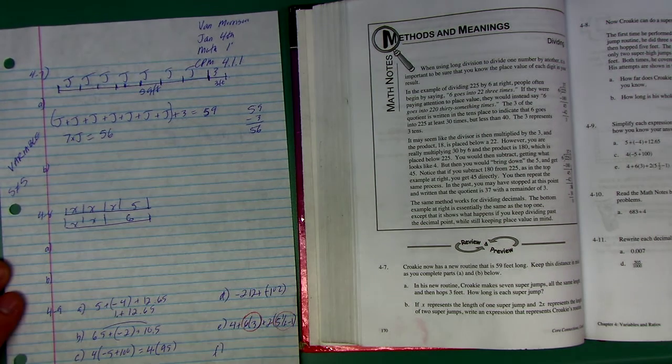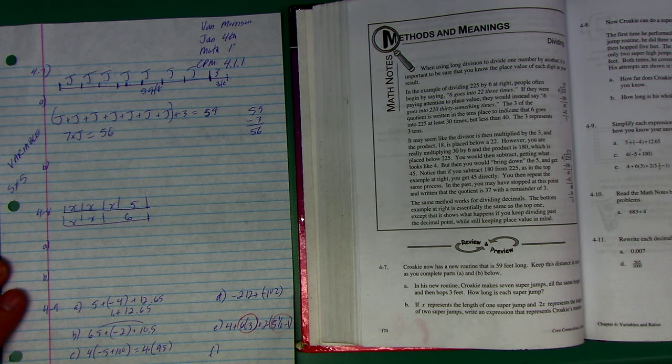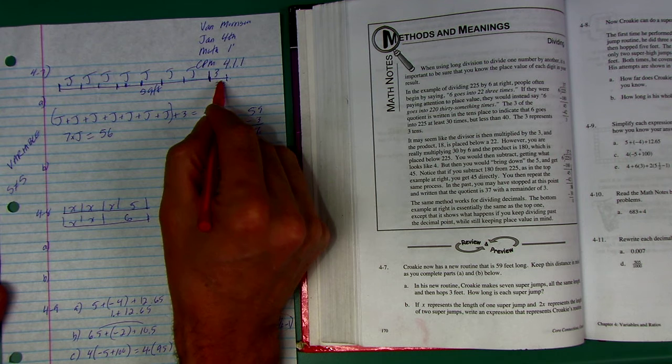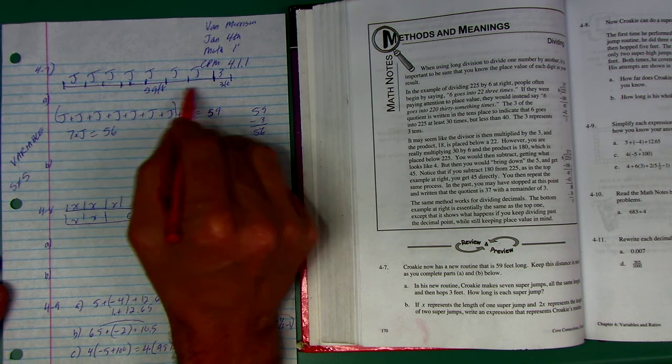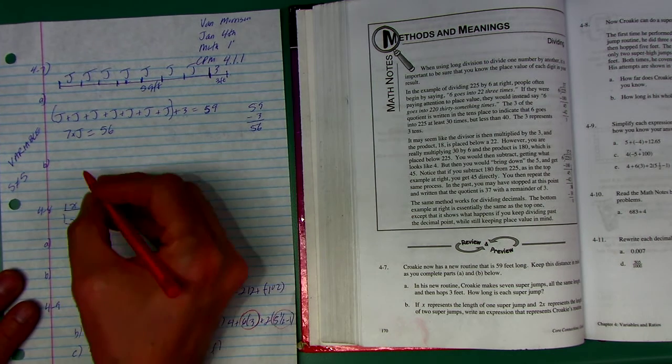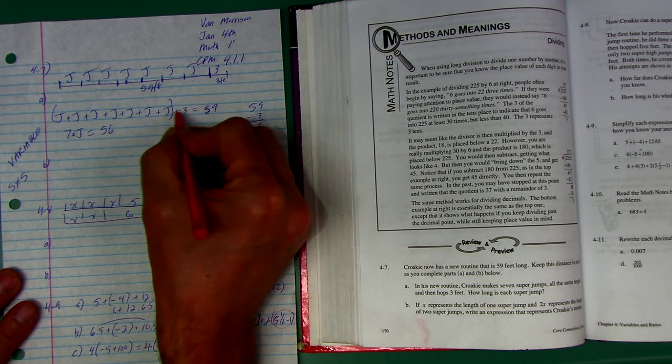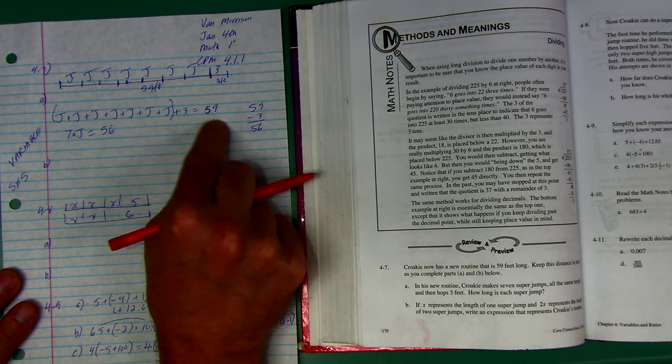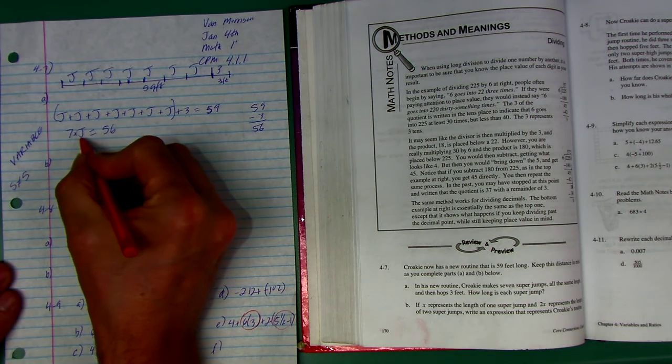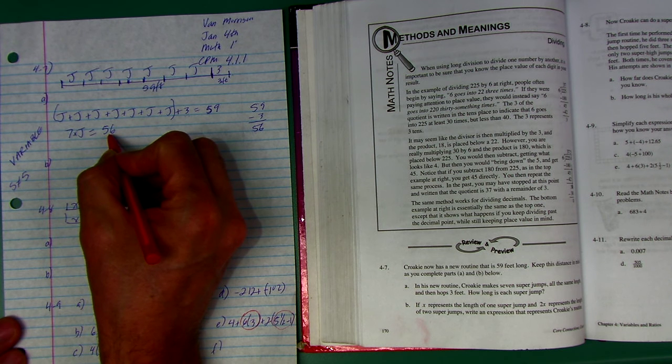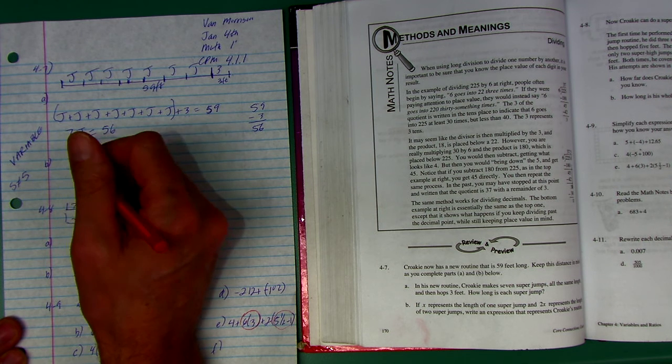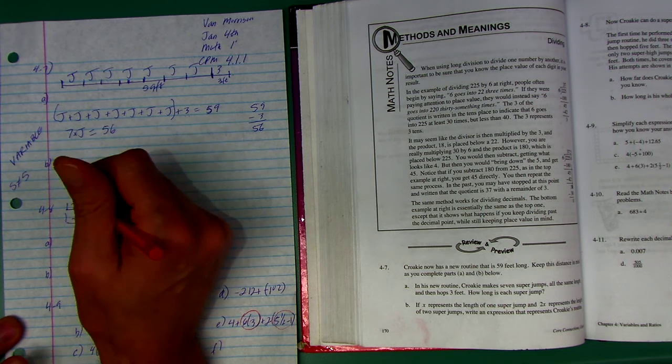Remember this first problem, the frog jumps seven times, called them super jumps, and then three more feet on the last jump wasn't a super jump. That was a total of 59 feet. So we figured out there was seven J's. We said J is a super jump. Plus the three is 59, which means if you take away that three, you got 56 for all these J's. They're all the same amount each.